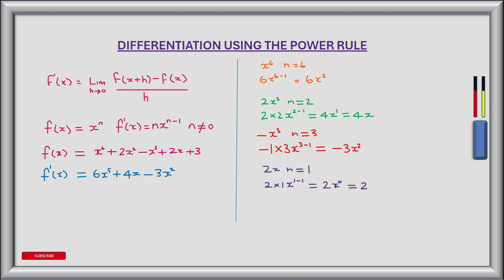Now let's look at the term 2x in our function f of x. Although you can't see a power of x, x is actually to the power of 1, so n is equal to 1. So we multiply the coefficient of x, which is 2, by n, which is 1, and then multiply that by x to the power of 1 minus 1. So 2 times 1 gives us 2, and x to the power of 0 is 1, so we're left with the value of 2. So now the derivative of f of x is equal to 6x to the power of 5 plus 4x minus 3x squared plus 2.